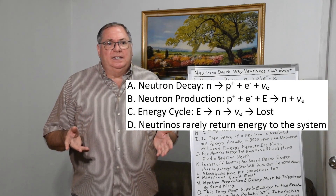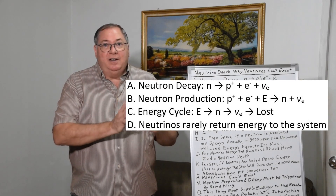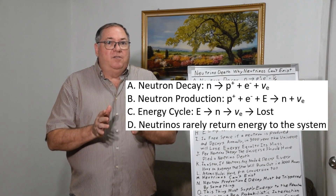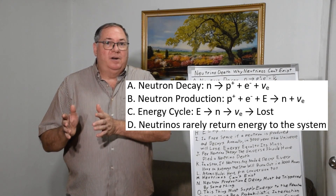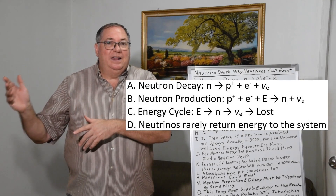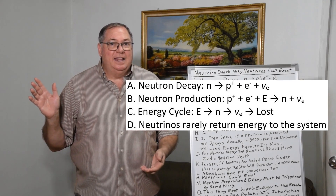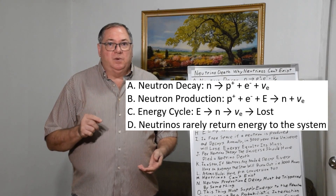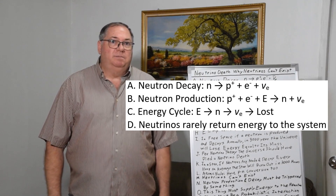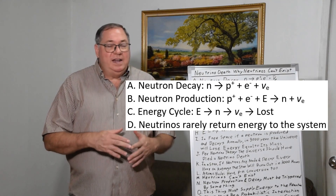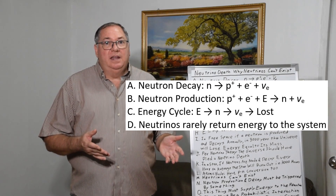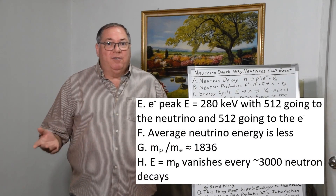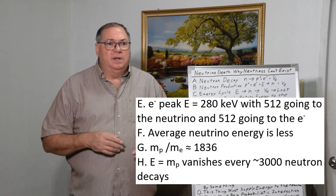What this gives us is an energy cycle where you have energy from somewhere — that's 782 keV — that becomes part of the neutron, and then some of that becomes part of the antineutrino. Then the antineutrino vanishes into space and the energy is lost, because neutrinos are rarely absorbed and the energy rarely recovered and returned to the system. Right there we can see that neutrino theory violates the principle of conservation of energy, because it's a one-way trip and the energy gets permanently lost.